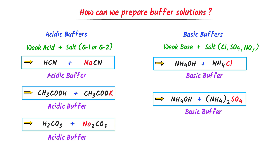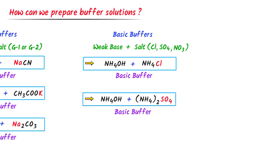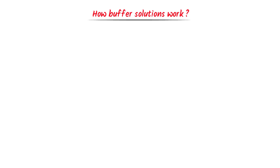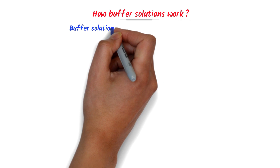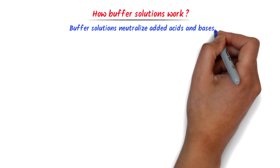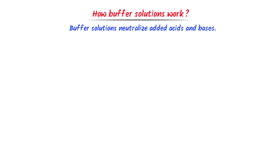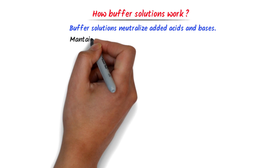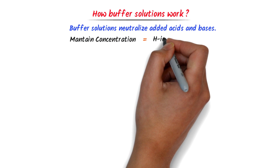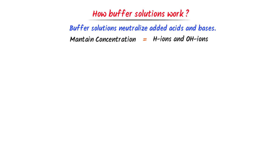Thus using this simple method we can easily prepare acidic buffers and basic buffers. Now let me teach you the working of buffer solution — how buffer solution maintains constant pH. Buffer solution works by neutralizing any added acid or base to maintain the constant pH. Buffer solutions maintain the constant concentration of hydrogen ions and hydroxide ions in solution.